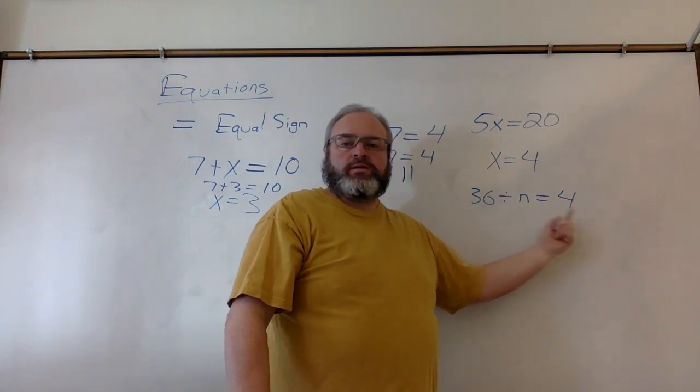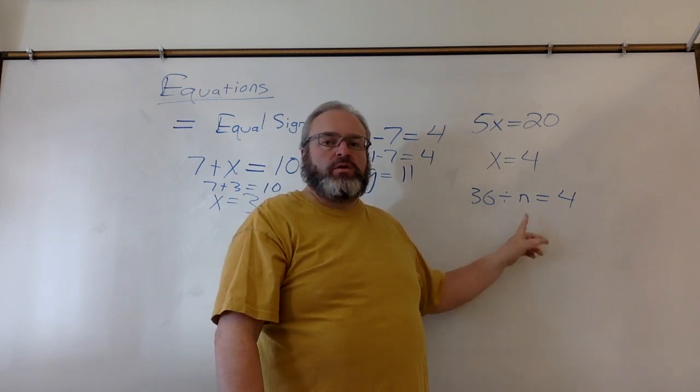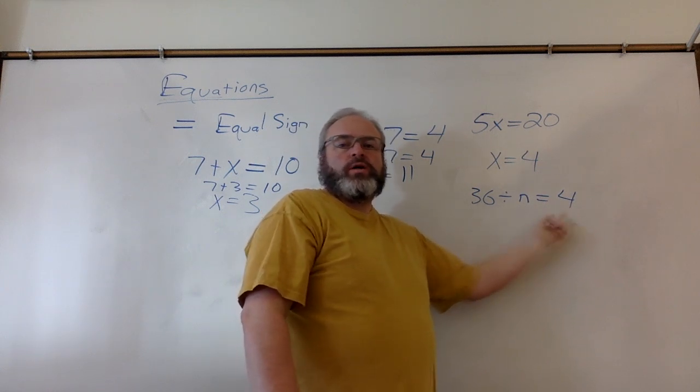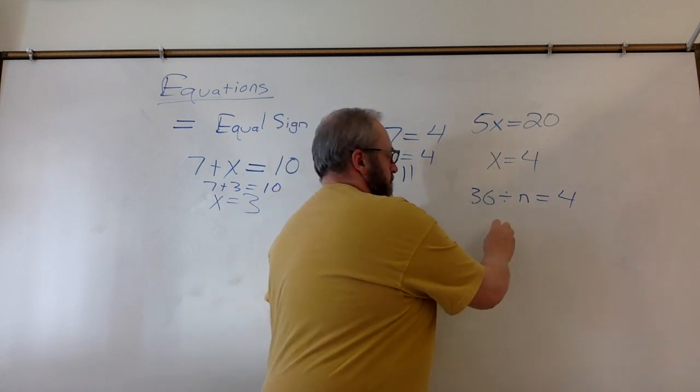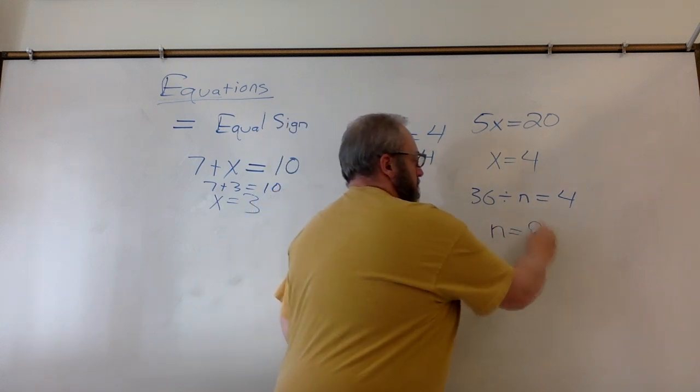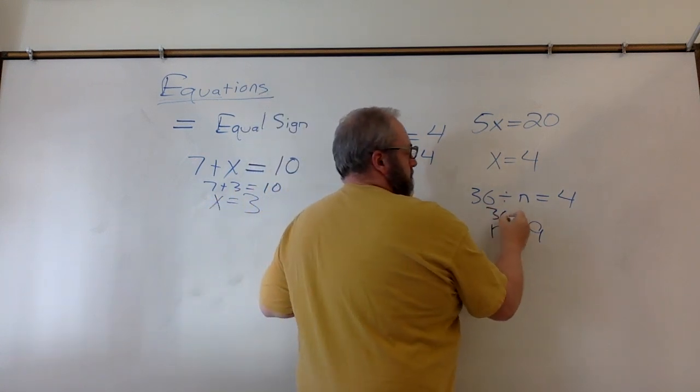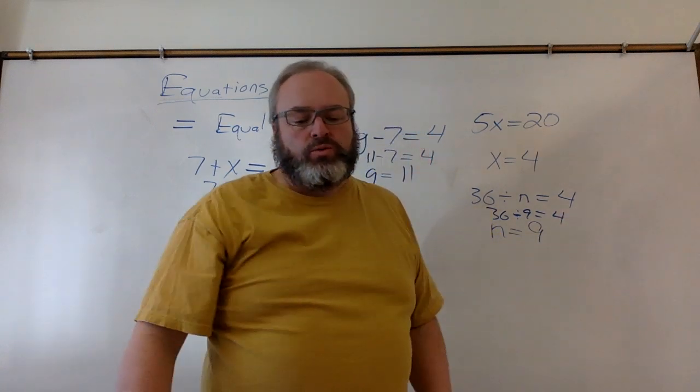36 divided by what is 4? Well, that might be a little tricky here. Some of you probably already figured it out, but if you are having trouble, work it backwards. 4 times what gives you 36? The answer has to be 9, because 36 divided by 9 is 4.